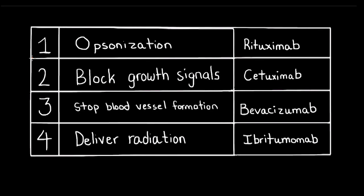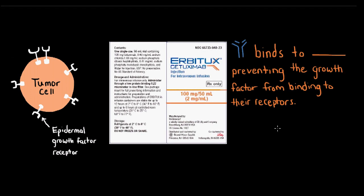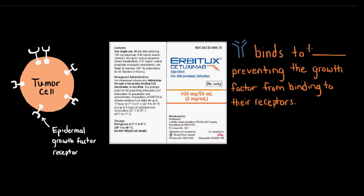Number two: monoclonal antibodies that block growth signals. The drug cetuximab, trade name Erbitux, is an FDA-approved chimeric monoclonal antibody that treats colon cancer and head and neck cancers. Cetuximab works by inhibiting epidermal growth factor receptors, EGFR, found on cancerous cells, so chemical growth factors are unable to attach to these receptors and the signal to grow is not generated. Cancer cells rely on this signal to tell them to divide and multiply, and by blocking it, cetuximab may slow or stop the cancer from growing.